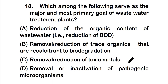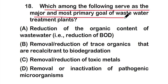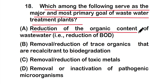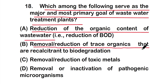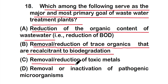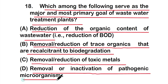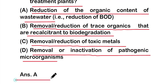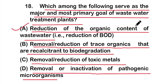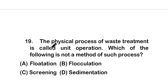Question eighteen: which among the following serves as the major and most primary goal of a wastewater treatment plant? Options: reduction of organic content of wastewater, removal or reduction of trace recalcitrant organics, removal or reduction of toxic metals, or removal or inactivation of pathogenic microorganisms. The right answer is option A — reduction of the organic content of wastewater.